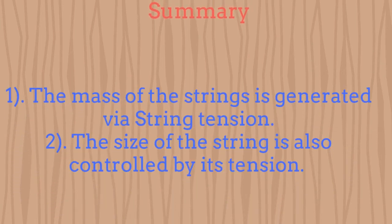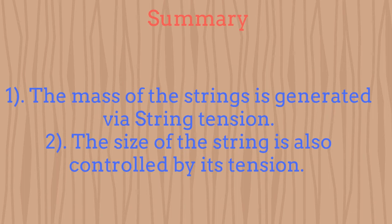The Planck scale then marks the maximal possible tension which a string could have. In summary, the mass of the strings is generated through their tension. Additionally, the size of the strings is also controlled by the same tension parameter.